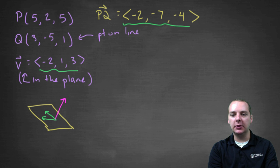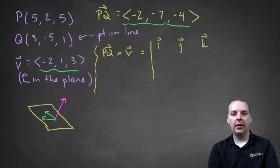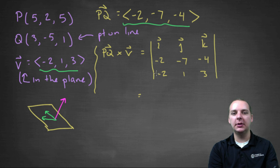So let me see if I can squeeze that in here. We'll take PQ cross v, which we'll get by taking a 3 by 3 determinant: i, j, k, and then -2, -7, -4, and -2, 1, 3. I'm going to skip some of the basic arithmetic algebra type stuff, just to speed things along. The i component will be -21 plus 4, so that'll be -17i.